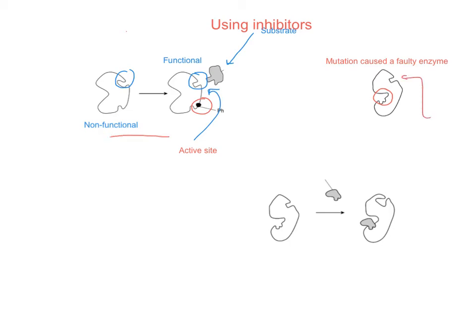What can happen is that in things like cancer, enzymes can, due to mutations, become faulty. Over here on the right-hand side, this binding site has basically changed shape, so we're no longer able to activate the enzyme anymore. The little activating substance — in this case a phosphate group — isn't able to do its job because the binding site has changed shape.